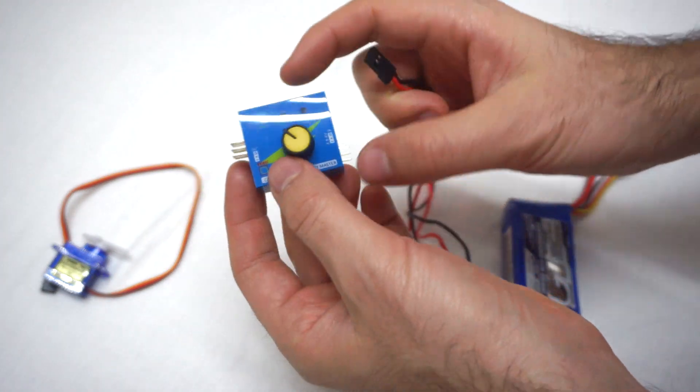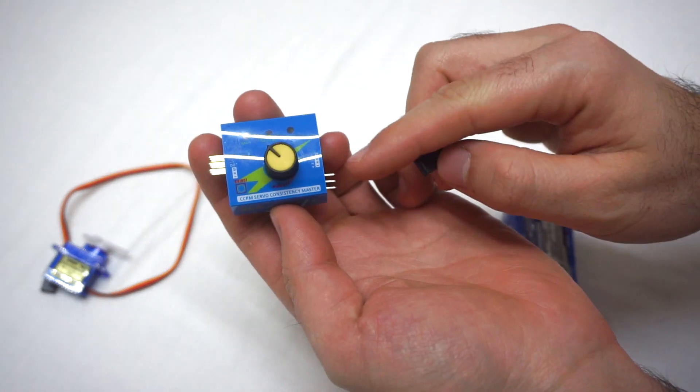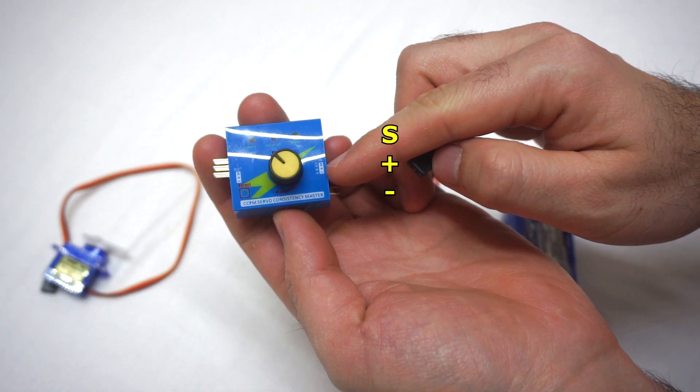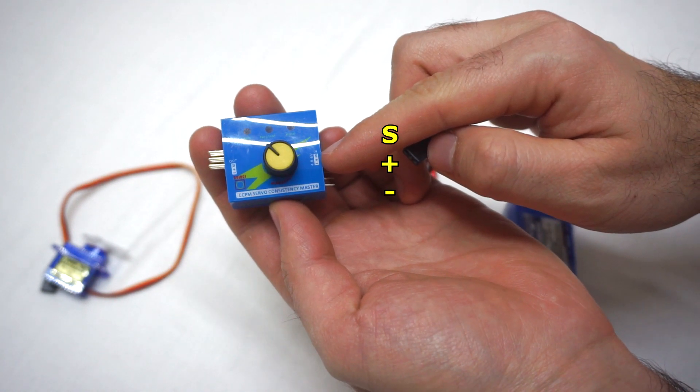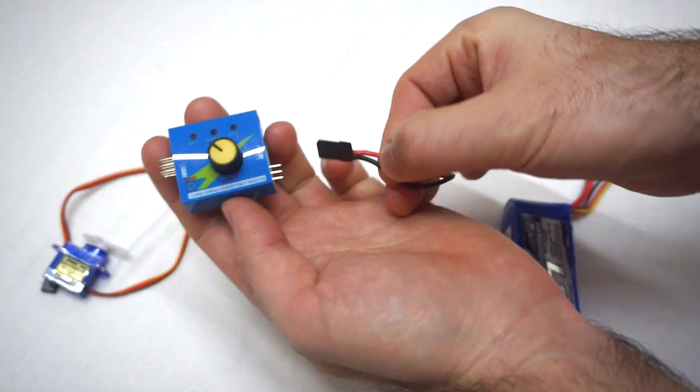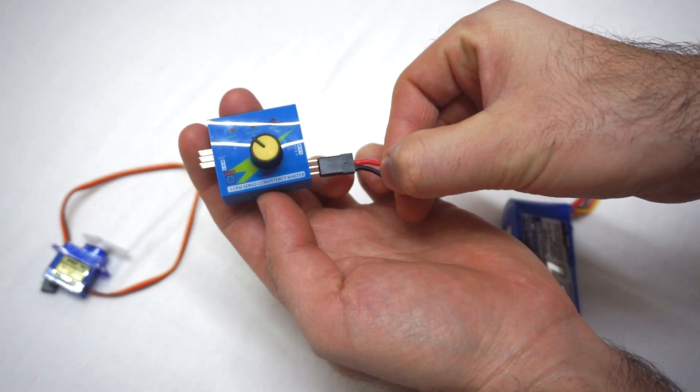Now let's connect the 5 volts DC to the servo tester. Here the minus is down, the plus in the middle, and signal would be on top. So minus down and plus in the middle.